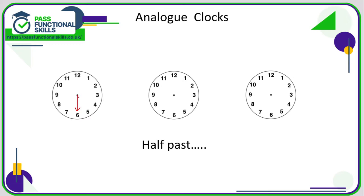When the long hand is on the six, that means we are at half past a certain number. The short hand will be halfway between two numbers. Here the short hand is halfway between one and two, and the big hand is on the six, so that's half past one. Here the short hand is between the eight and the nine — that's half past eight. And one more: the long hand is on the six and the short hand is between 10 and 11, so that is half past ten.